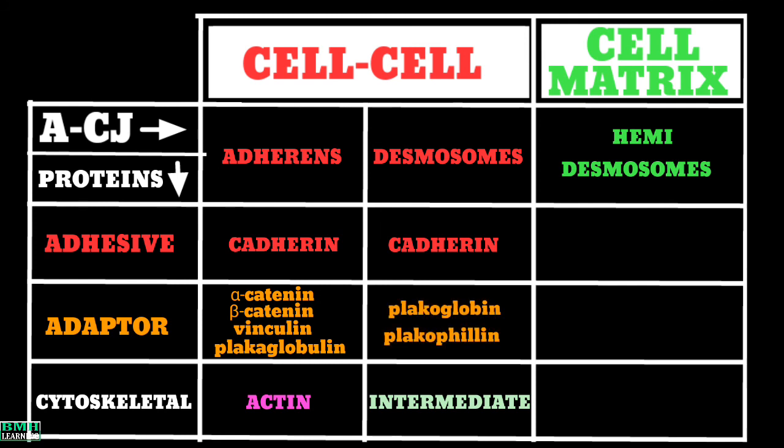Now the hemidesmosomes have integrins as transmembrane linker proteins, or we simply say adhesive proteins. Plectin is the adaptor protein you would notice in this category. Finally, they are connected to intermediate filaments. This was all. Thanks for watching.